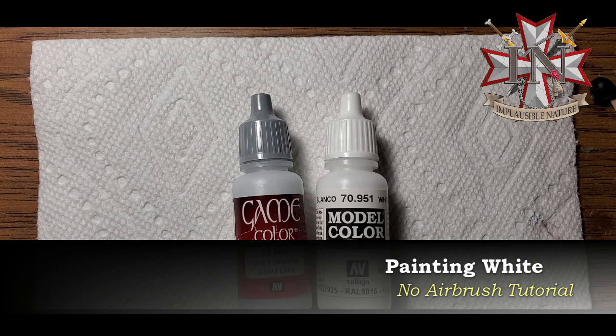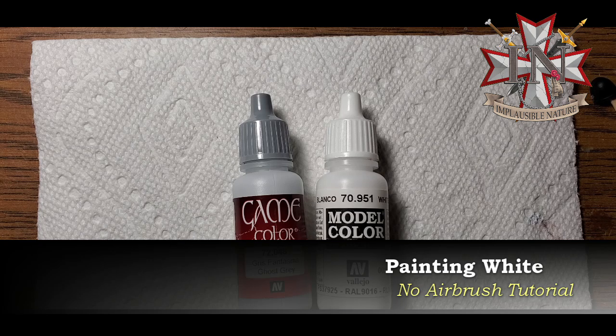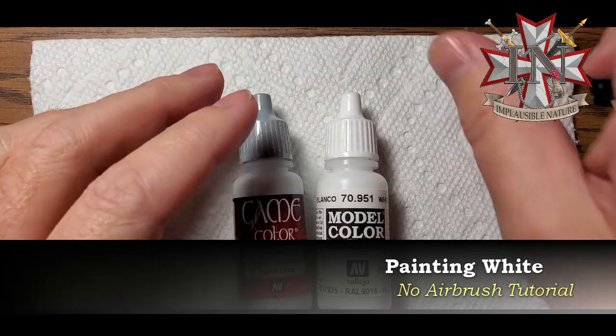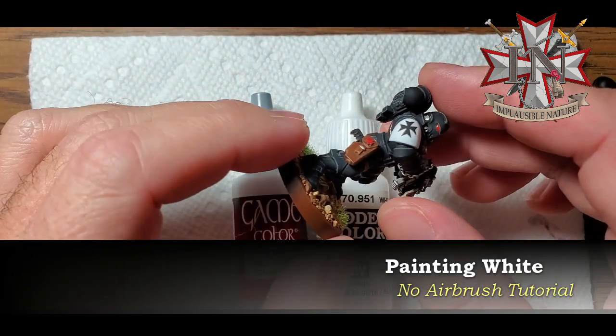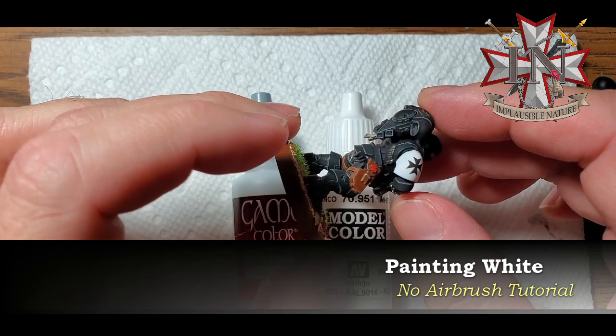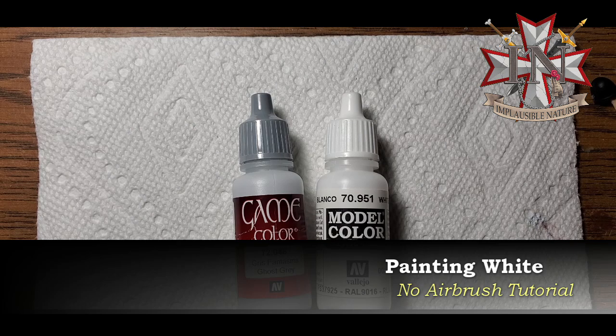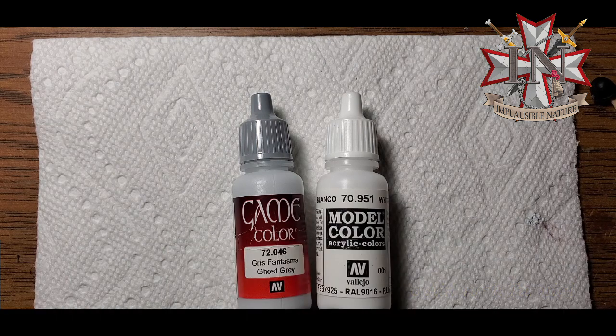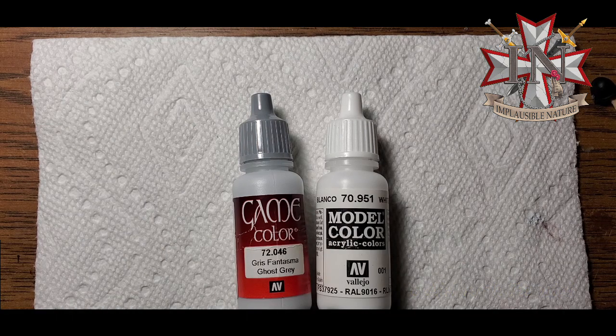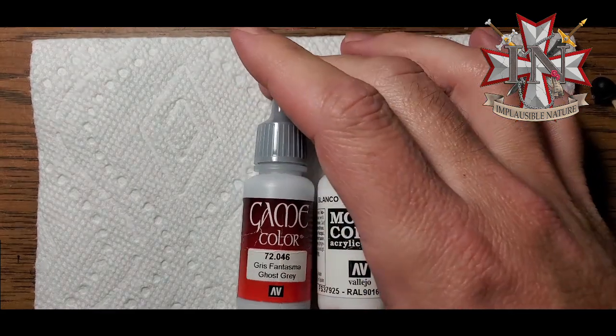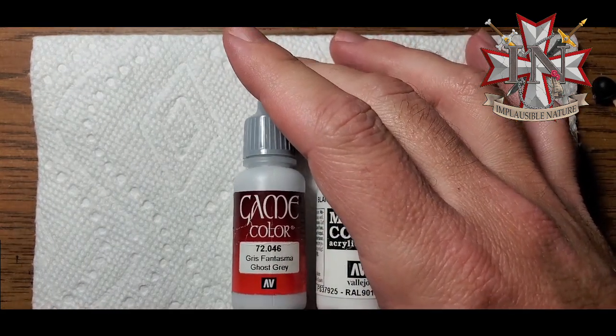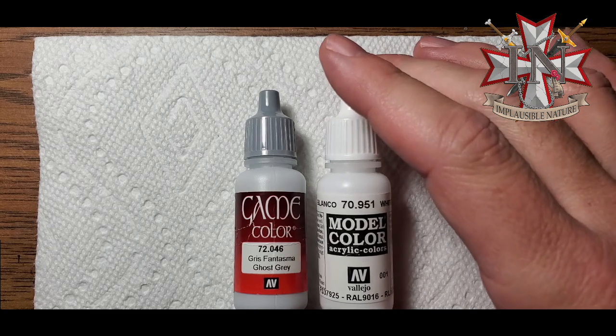I'm going to show you how to get a nice, crisp, clean white using just a couple of paints. You can see here, nice and smooth, nice and crisp. I prefer that clean look. We're going to use Vallejo Game Color Ghost Gray and Vallejo Model Color White. The Ghost Gray is equivalent to, or close enough to, Ulthuan Grey from Games Workshop.